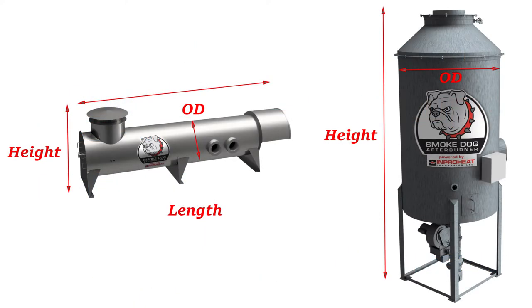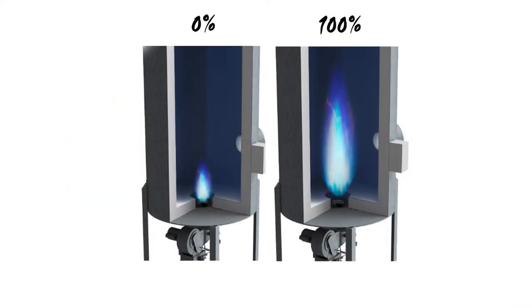Afterburners are available in horizontal or vertical designs. Our most popular unit for single roasters uses a simple on-off activation feature to initiate the oxidization schedule automatically.